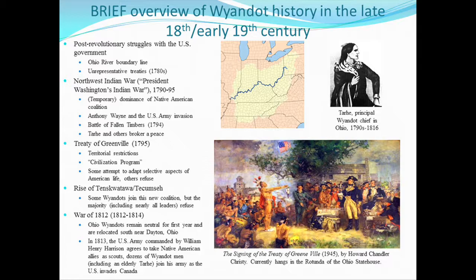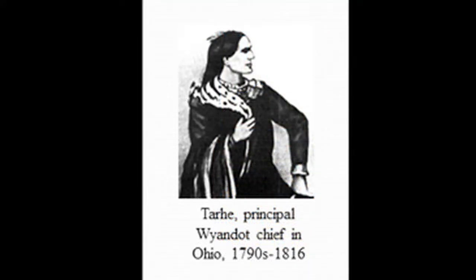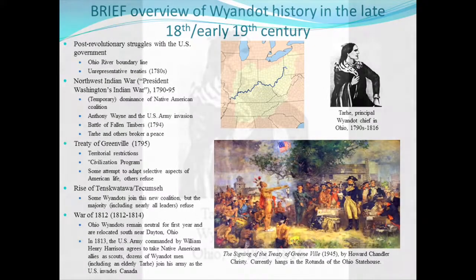After the Battle of Fallen Timbers, for the next eight months or so, a series of Native leaders tried to broker a peace agreement with Wayne. One of the key figures in this story is a Wyandotte chief named Tarhee, shown in the illustration at the right. Tarhee was one of the principal speakers at the Treaty of Greenville and a key leader in this part of the world in terms of political power. Tarhee and others brokered a peace deal, and all of the major leaders of the Native coalition agreed to it. The peace they negotiated is called the Treaty of Greenville.